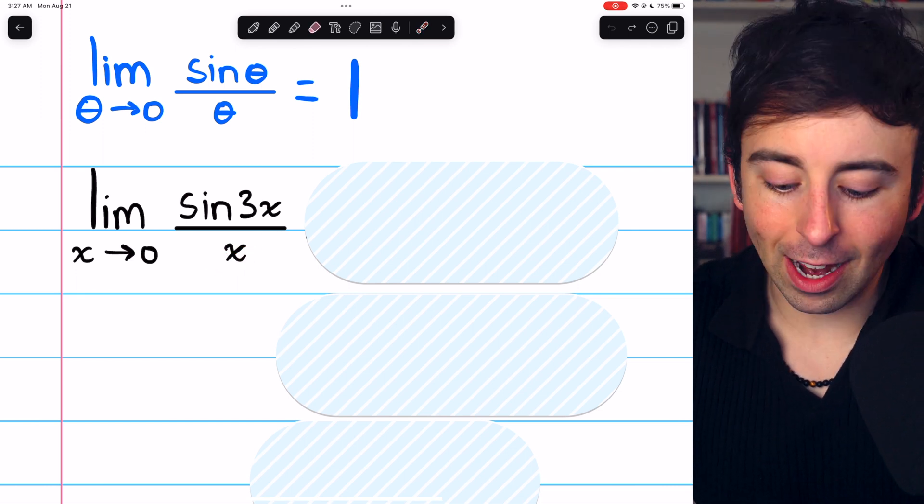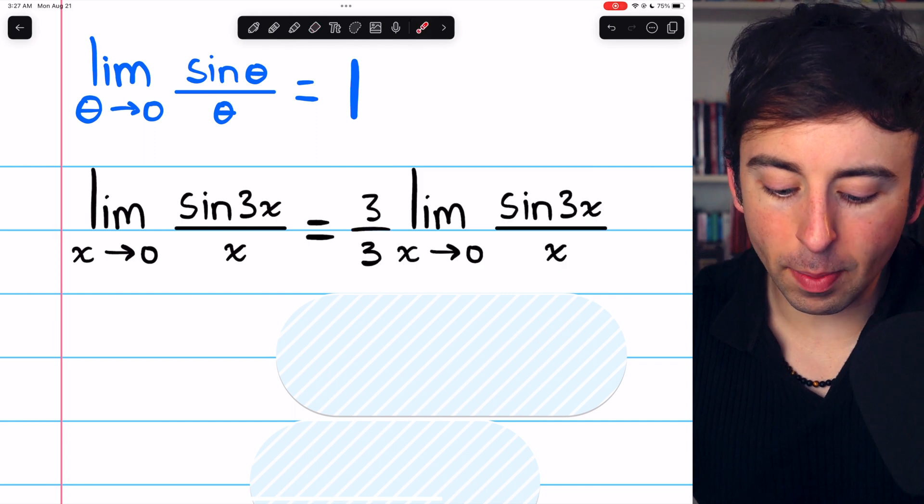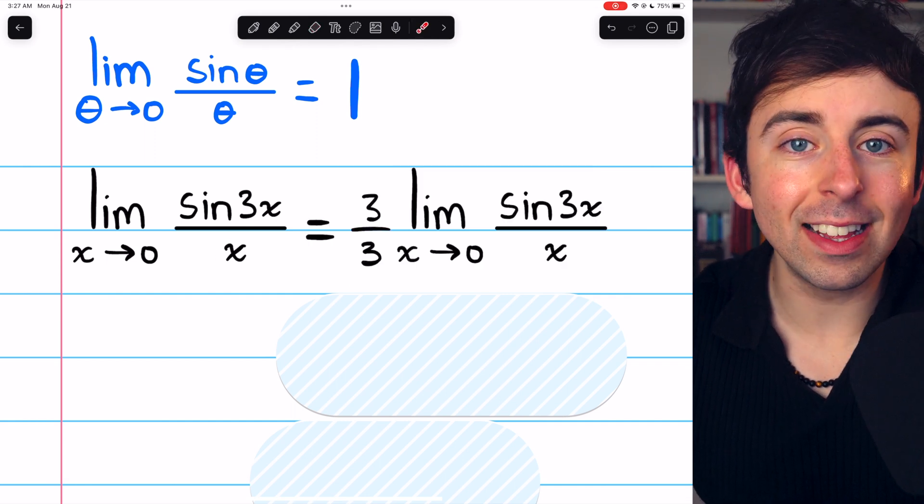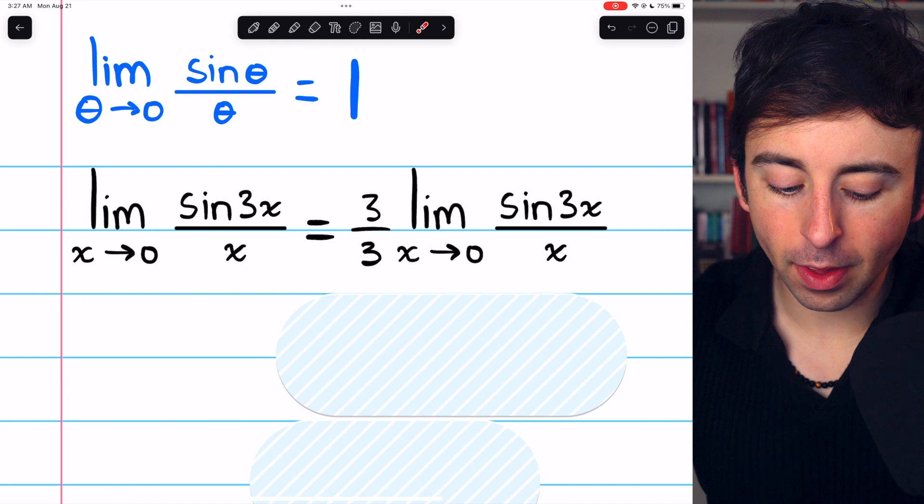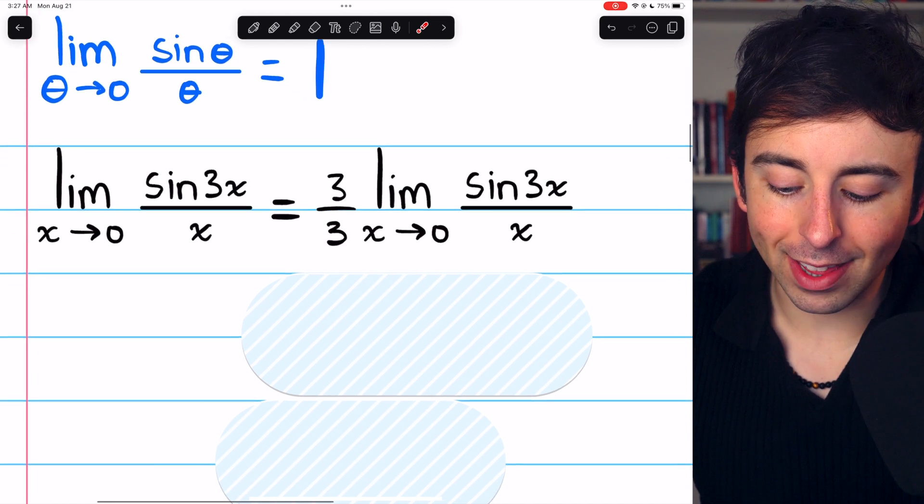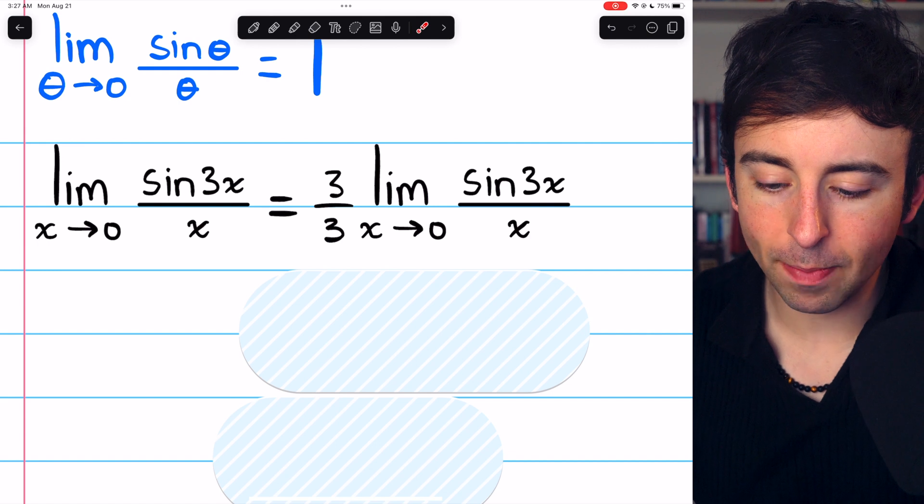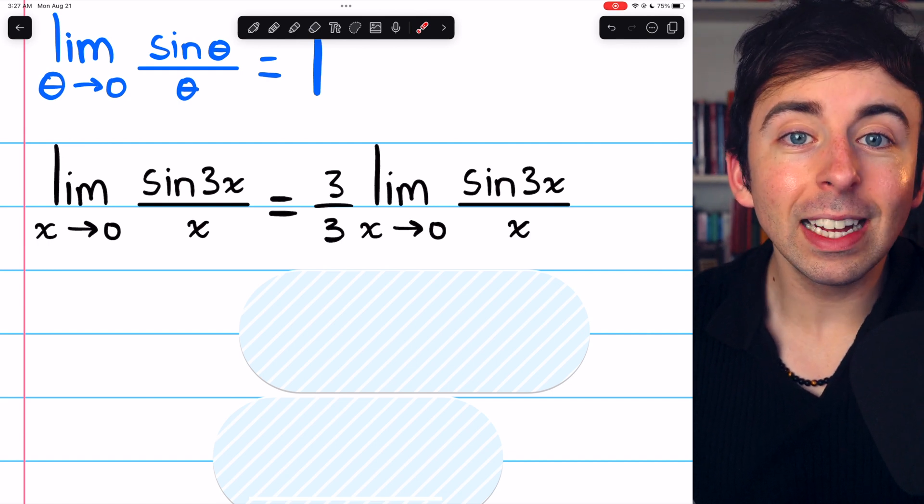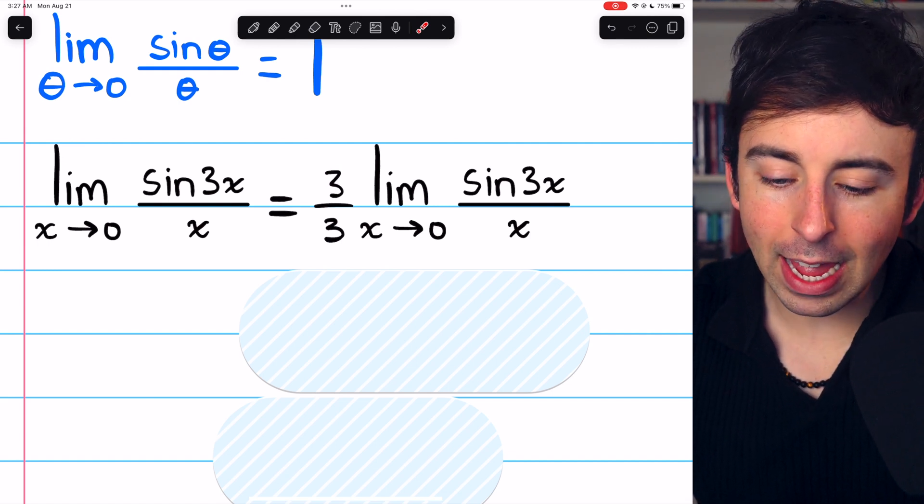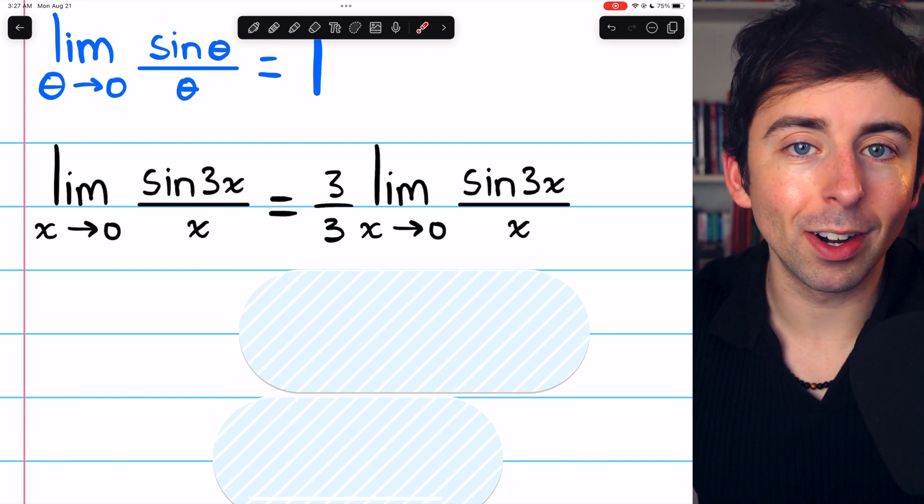Thankfully, that's pretty easy to do. Again, right now, the goal is to get the denominator to match what's inside the sine function. Certainly, we could multiply this limit by 3 over 3 since 3 over 3 is just 1. It's like multiplying by 3 and multiplying by 1 third.